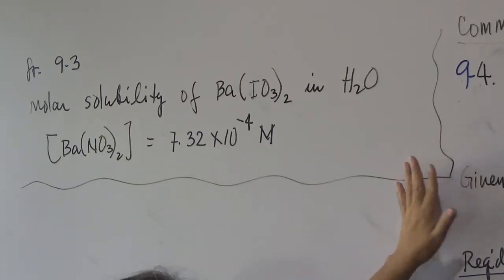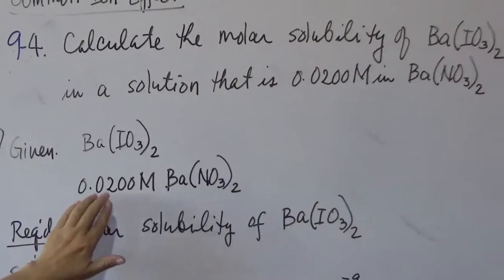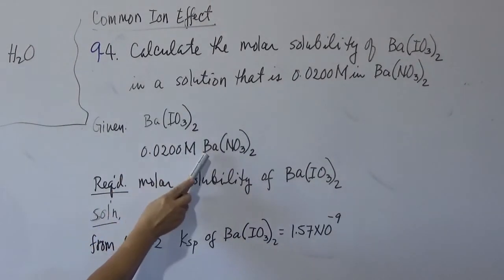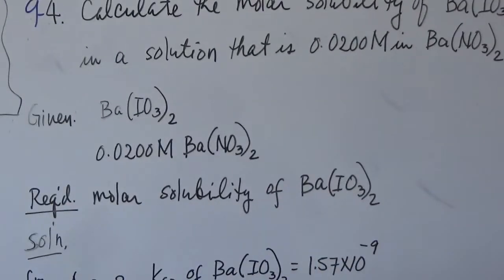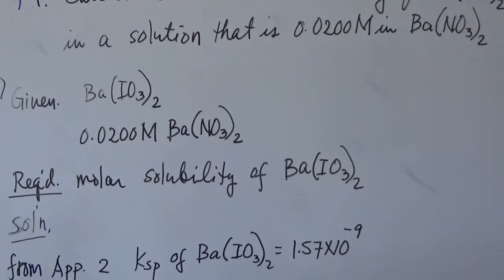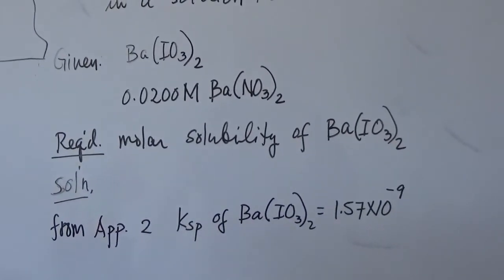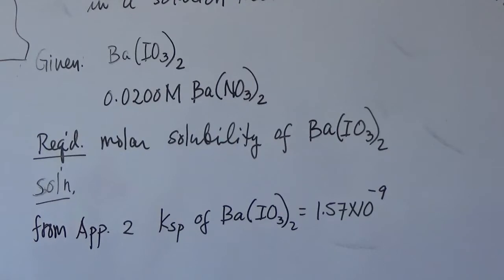Let's proceed to problem 9.4. We are given barium iodate dissolved in 0.02 molar barium nitrate; the common ion is barium. The required value is the molar solubility of barium iodate. The solubility product constant (Ksp) of barium iodate from Appendix 2 is 1.57 × 10⁻⁹, same as in problem 9.3.